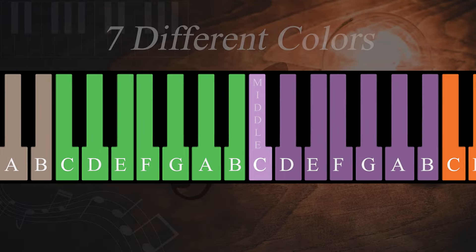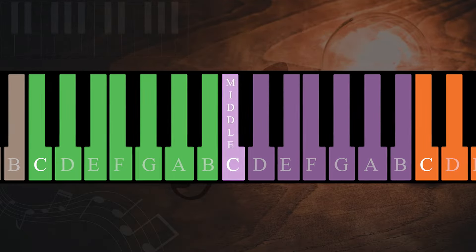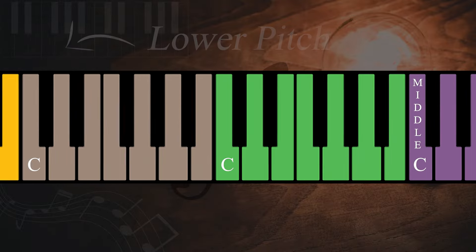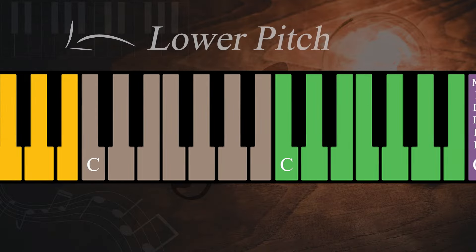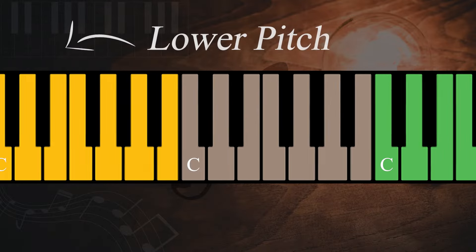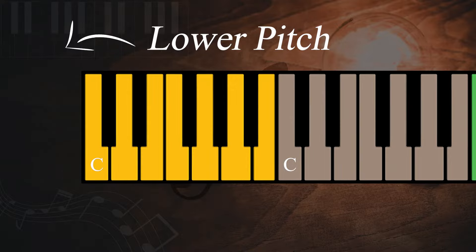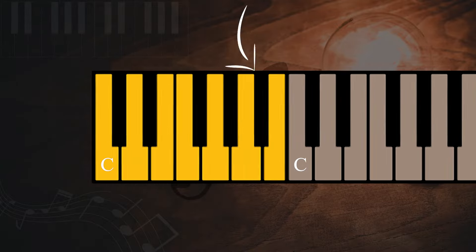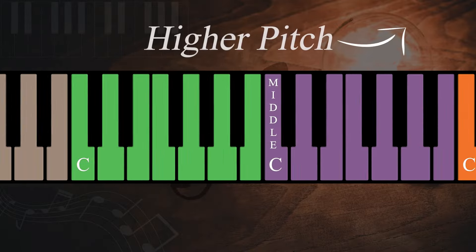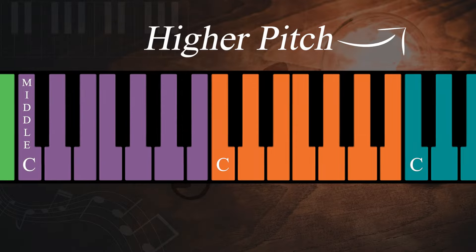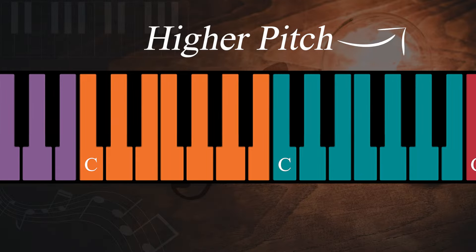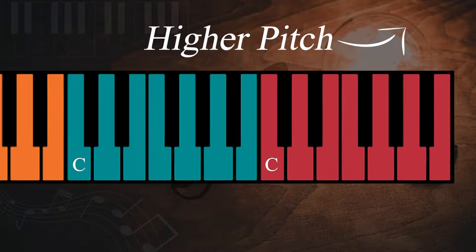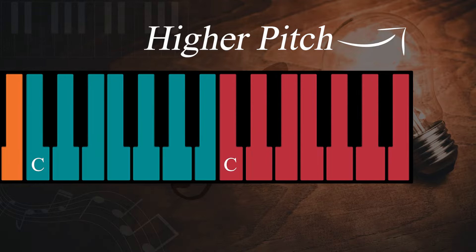Middle C is purple and is located here. The C that is below middle C is green. The next C to the left is brown. And the lowest C on the piano is yellow. The C that is above middle C is orange. The next C to the right is blue. And the C that is above blue is red.